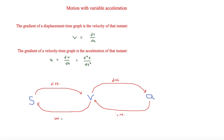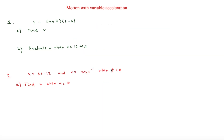That is the general rule you need to learn — it will come in very useful for the questions we're about to answer. The first question involves differentiating, and the second involves integrating. The first one says that displacement s equals (t + 2)(t − 6). We expand the brackets to get t² − 4t − 12, since 2t − 6t gives −4t.